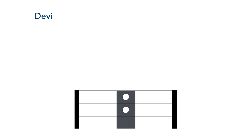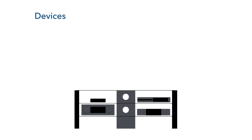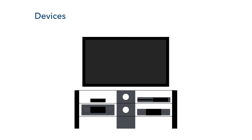SimpleSystem is able to control multiple devices in your room, including your AV receiver, set-top box, Blu-ray player, media player, television, thermostats, and home automation hubs which provide control over lighting and other items. These are what we refer to as devices in SimpleSystem.